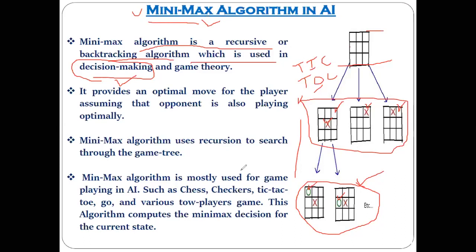Using the min-max algorithm, it becomes possible to make the optimal move for the player, assuming the opponent is also playing optimally. During this, the condition being taken care of is that the other player playing against you is also as intelligent as you — the same assumption you make when playing any game. This is also taken into account when designing the min-max algorithm.